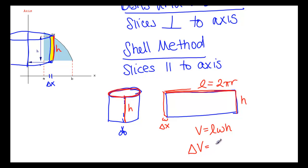That's going to be volume of one little slice is going to be the length, 2πr, times the height, h, times delta x for the width.